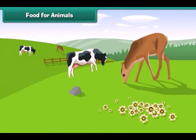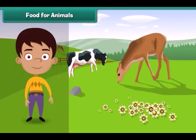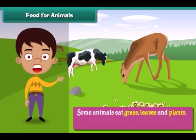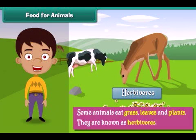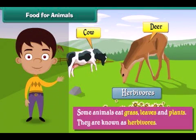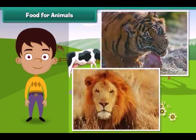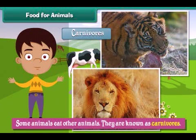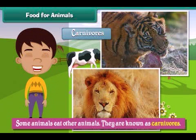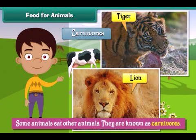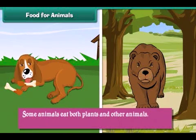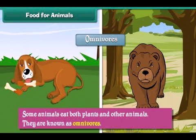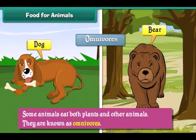Some animals eat grass, leaves and plants — they are known as herbivores. Examples of herbivores are cows and deer. Some animals eat other animals — they are known as carnivores. Examples of carnivores are lions and tigers. Some animals eat both plants and other animals — they are known as omnivores. Examples of omnivores are bears and dogs.